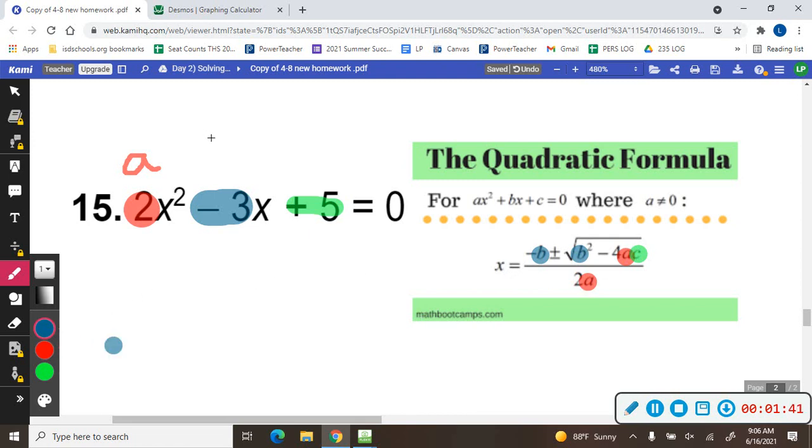b is negative 3. Because b is always the number in front of x. So everywhere I see a b, I'm going to put negative 3. And then c is 5. Everywhere I see a c, which is one place, I'm going to put a 5.